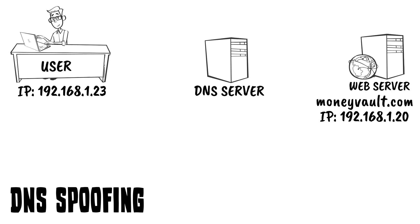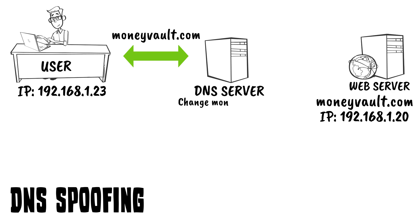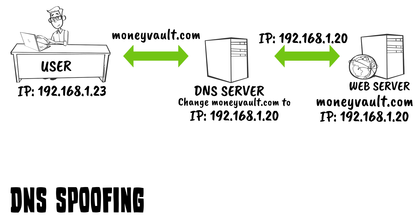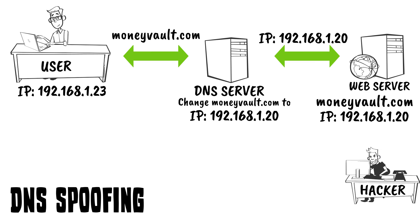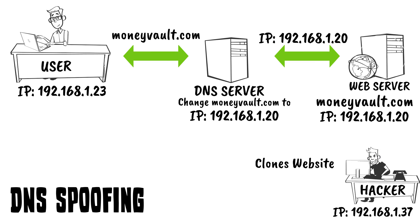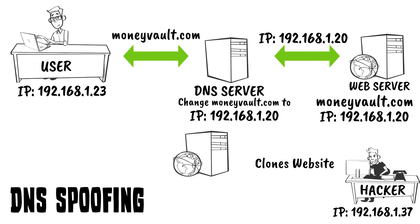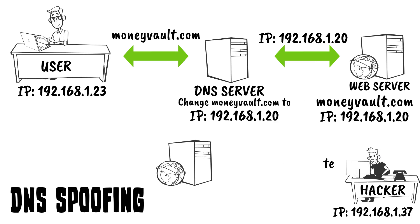Another spoofing technique is a DNS spoof. When a user requests a website — in this case moneyvault.com — the DNS server changes moneyvault.com to the IP address of the web server, which is 192.168.1.20. In a DNS spoofing attack, the hacker can spoof the DNS to point to the IP address of a fake web server that hosts a fake website that the hacker has cloned.